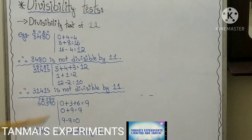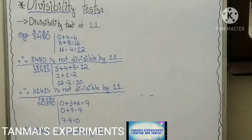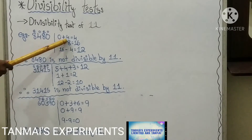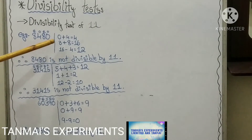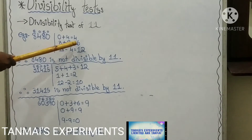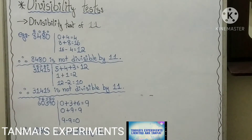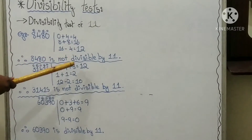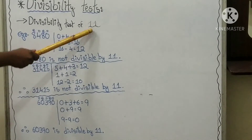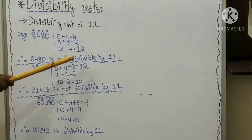The divisibility test of 11: for the given number, you have to mark the digit positions as odd, even, odd, even from right to left. Then add all the digits in odd positions, and add all the digits in even positions. Find the difference of both sums. For example, 8,480: the odd-position digits are 0 and 4, so 0 plus 4 equals 4. The even-position digits are 8 and 8, so 8 plus 8 equals 16. The difference is 16 minus 4 equals 12, and 12 is not divisible by 11, hence 8,480 is not divisible by 11.